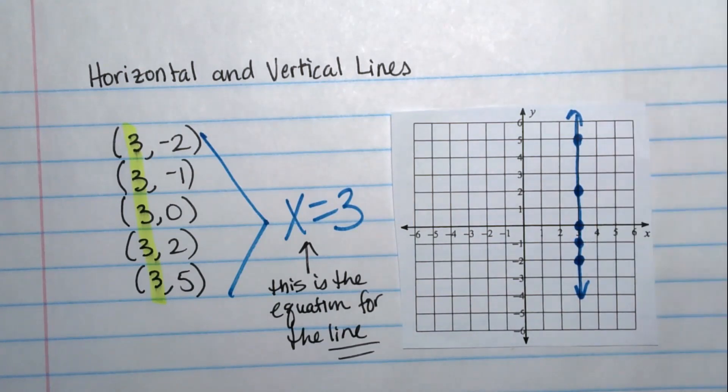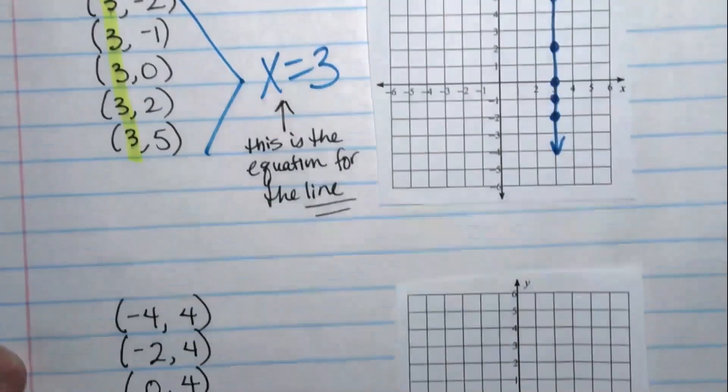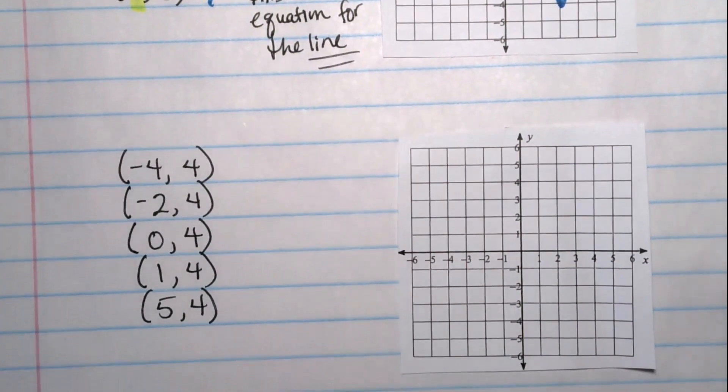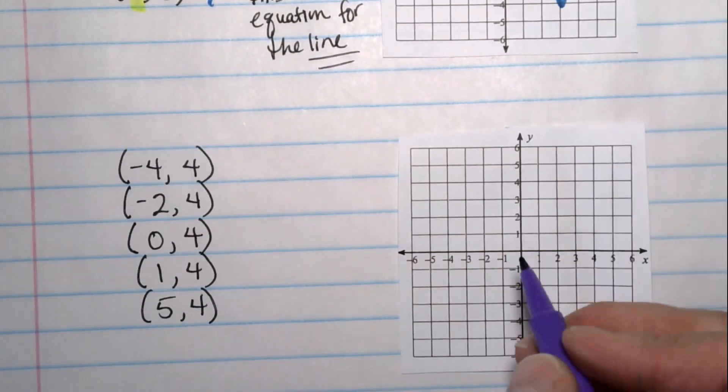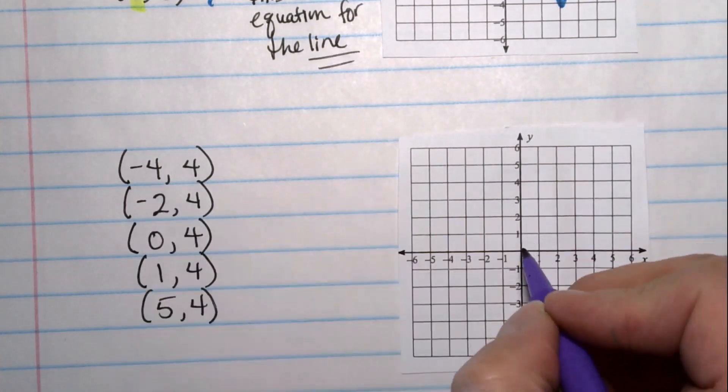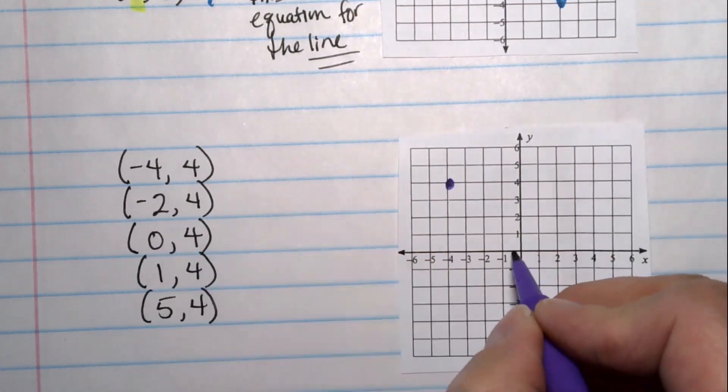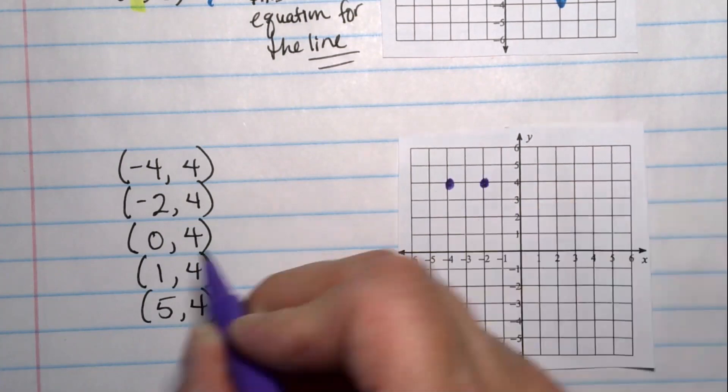Now taking a look at the other situation, what happens when you keep the y the same? So I'm going to start with negative 4, 4. So I go back negative 4 and go up to 4. Negative 2, 4. Again, I'm just kind of bouncing around here. 0, 4. That's the intercept.